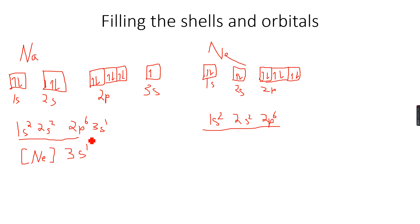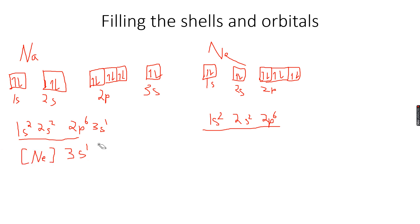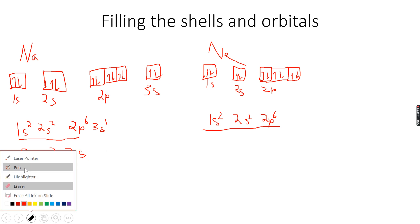You cannot put just any element in the square brackets — you must always use noble gases. For magnesium, which has 12 electrons, it will have one more electron than sodium in 3s, so it becomes [Ne] 3s². The [Ne] stays the same; only the outer part changes. Sometimes exam papers give configurations in this format, and now you know how to read them.